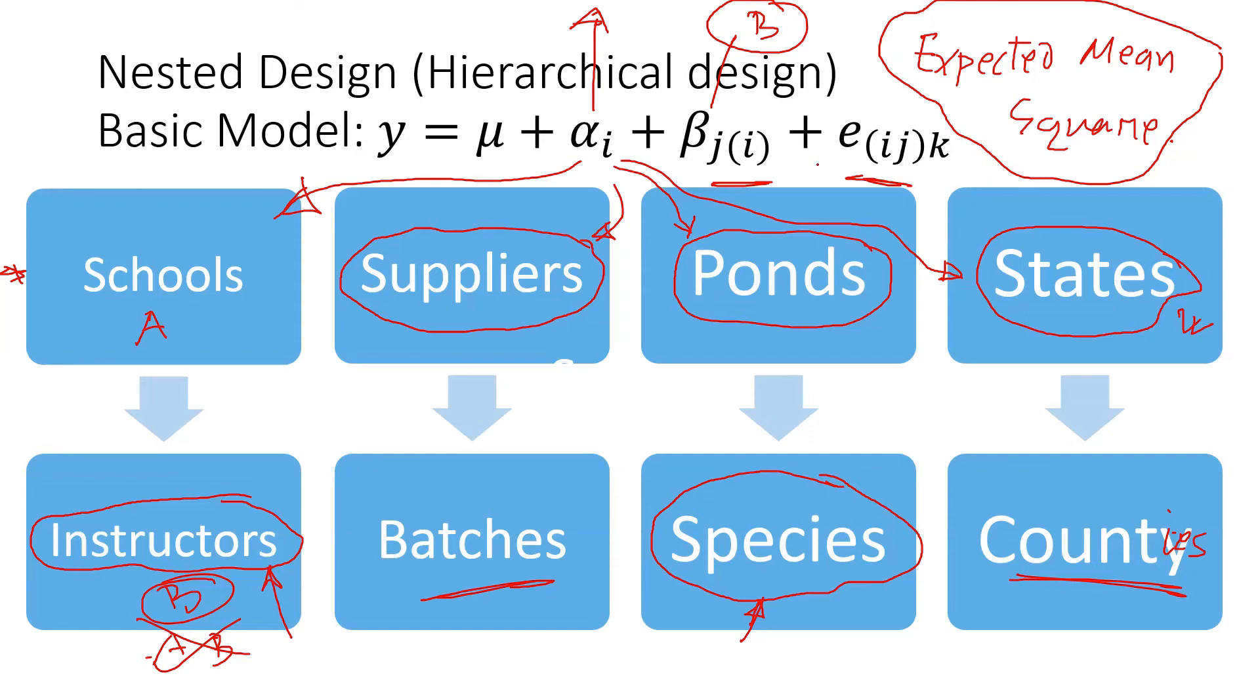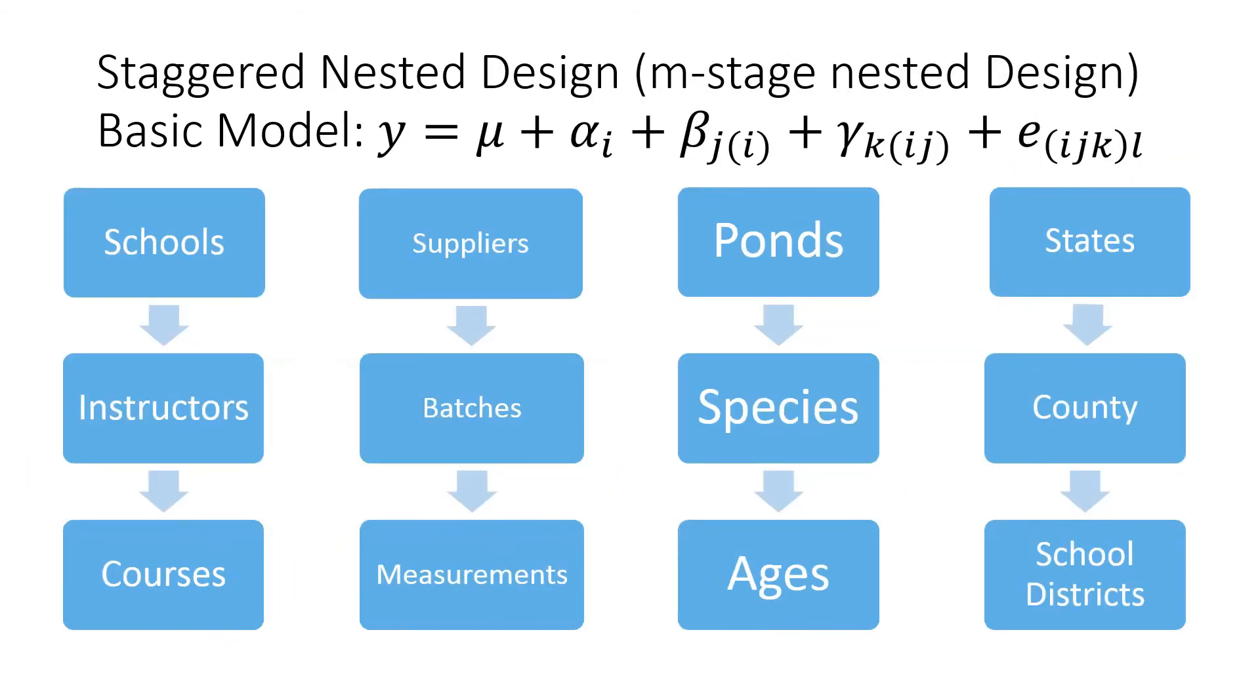Let me show you a little bit more complex nested design or staggered design or m-stage nested design. For example, there could be three-stage nested design: instructors are nested under schools, and then each instructor teaches a few courses, so courses are nested under instructors. Same thing can happen—batches are nested in suppliers, and if we're doing two measurements in each batch, then these measurements are also nested. Similarly, school districts are nested in counties, and counties are nested in states. In that case, there is no interaction effect, so the model only contains the effect of A, effect of B, and then effect of C factors. In this case, A is school, B is instructor, and gamma would be courses.